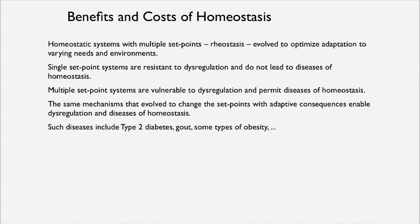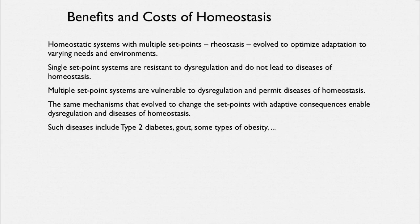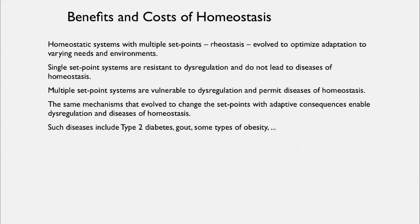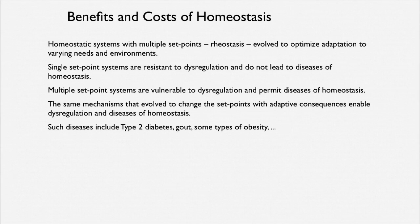Homeostasis also has its own benefits and costs. Homeostatic systems that are very adaptive — with multiple set points — are rheostatic; they evolve to optimize adaptation to different needs and environments, such as moving up mountains or doing extensive diving. A single set-point system is resistant to dysregulation but lacks adaptive ability. A multiple set-point system is vulnerable to dysregulation and can permit a disease of homeostasis. The same mechanisms that evolve to change set points enable dysregulation and diseases like type 2 diabetes, gout, and some kinds of obesity.